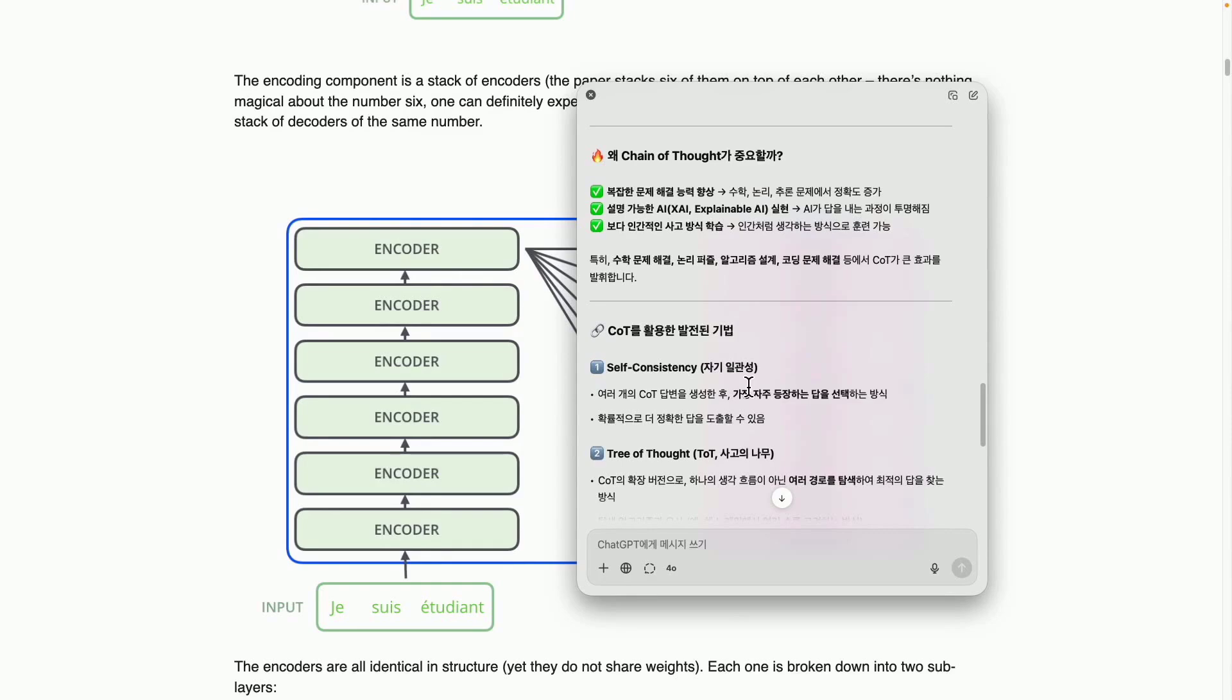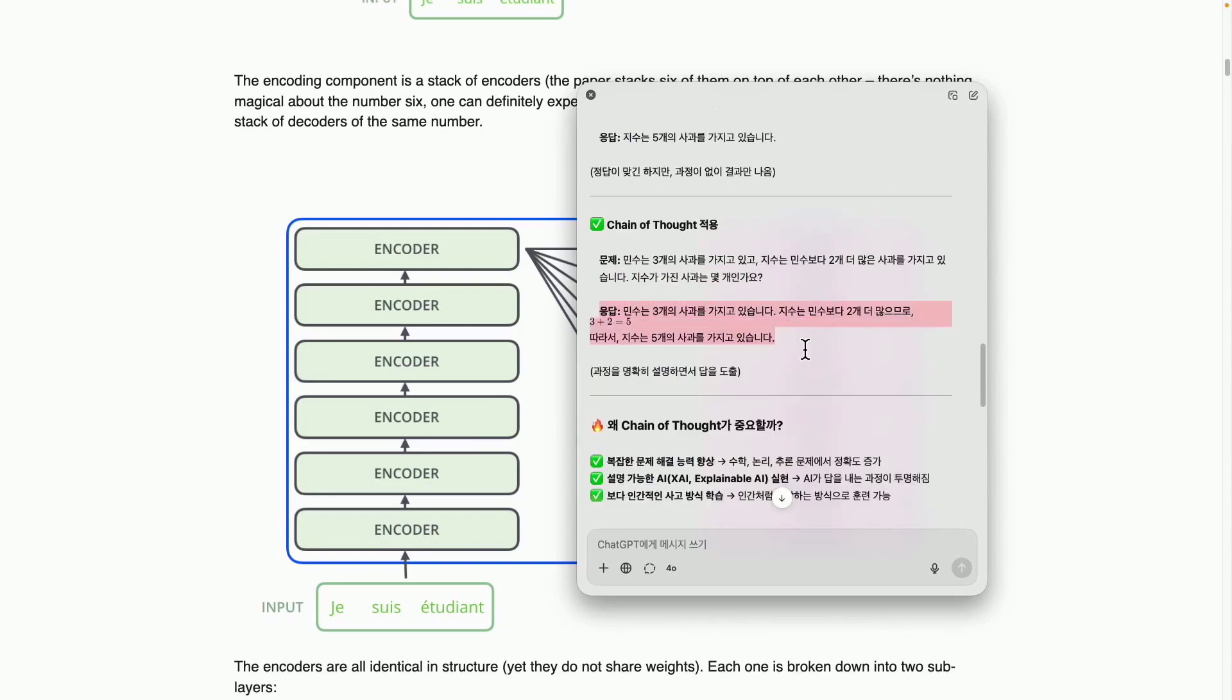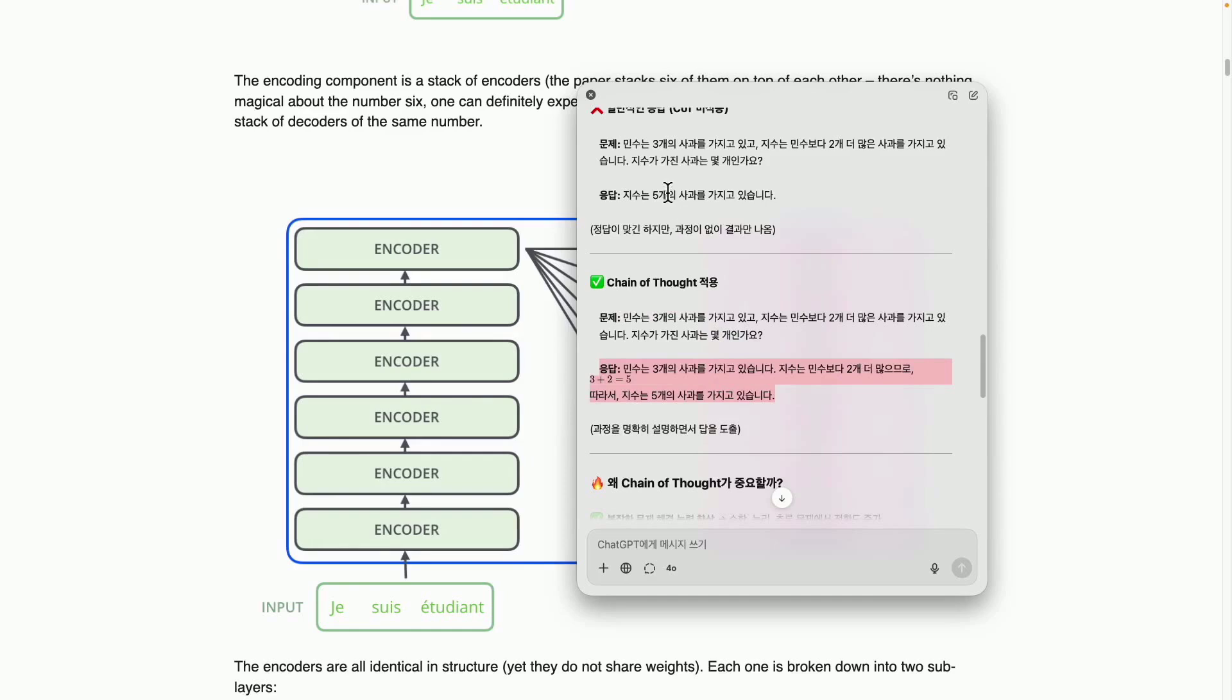However, the issue with using this chain of thought method is that the model converts the intermediate processes back into text. Originally, everything was represented in numbers through embedding, but now it's expressed in Korean or English, which significantly increases the length. By increasing the model's length, we observe a slight performance boost. However, this method demands significantly more high bandwidth memory, necessitates increased communication, and requires greater usage of GPUs. The chain of thought method, which involves handling much longer contexts, thereby places a heavier load on high bandwidth memory.